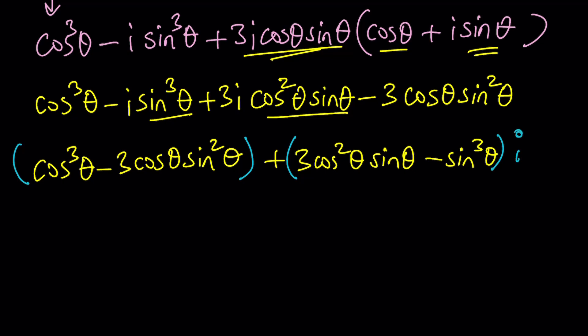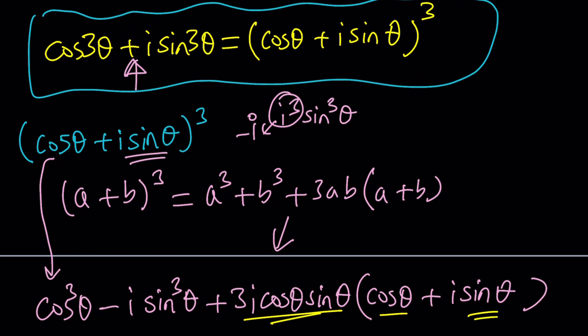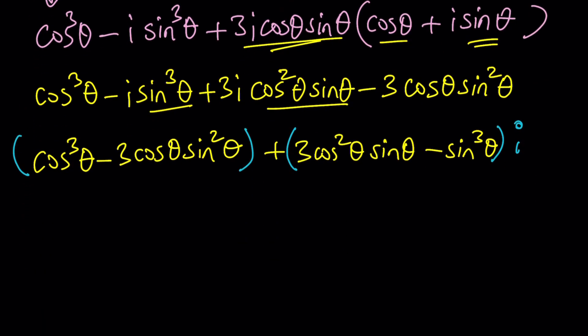And this is supposed to equal what? Cosine 3 theta plus I sine 3 theta. So in other words you got the answer. This is cosine 3 theta and this is sine 3 theta.